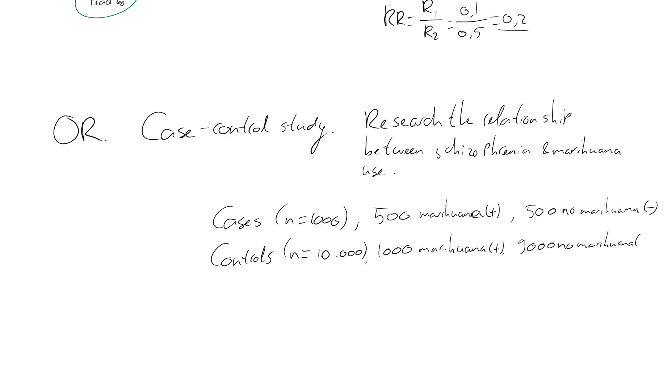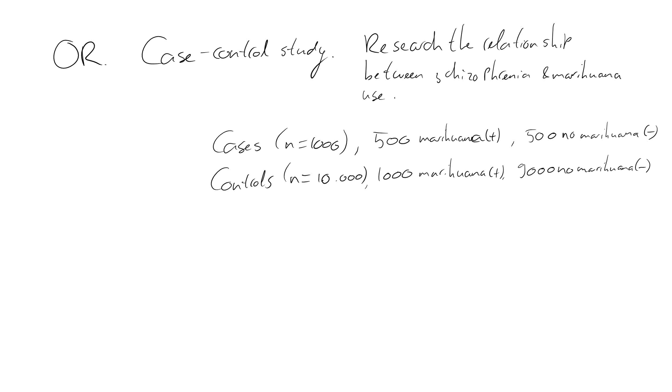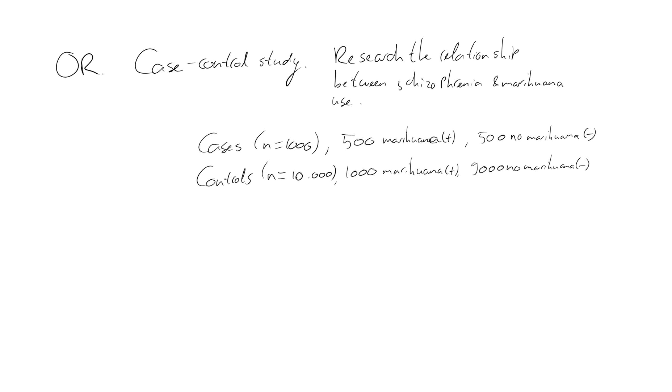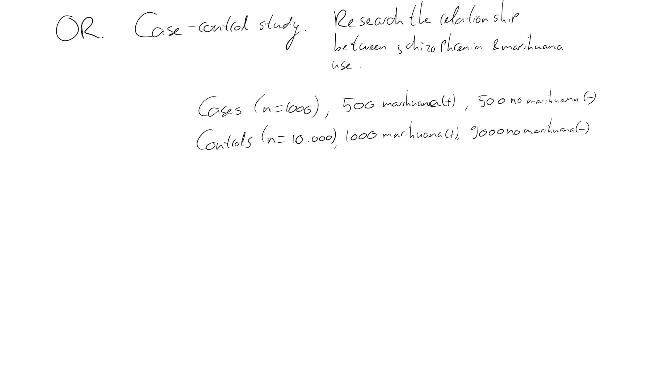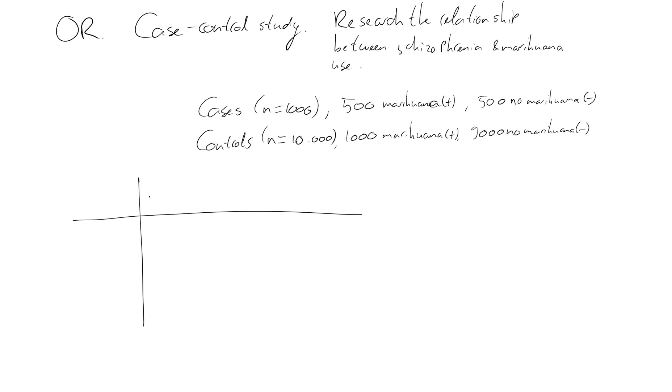So that's a minus. Again, we make the same table. Schizophrenia, no schizophrenia. We have the cases, these are the cases. These are the controls. And here we have the exposed group and the not exposed group. And here, exposure, contrary to the previous example, exposure is a negative thing. It means you're using marijuana. Here it's no marijuana.